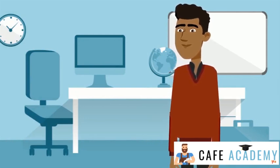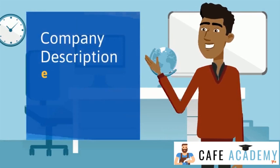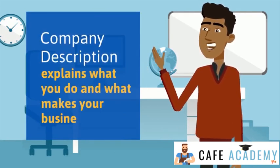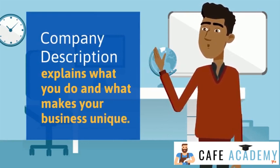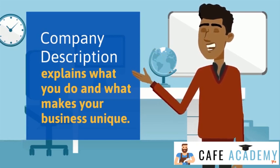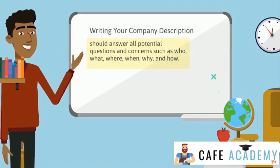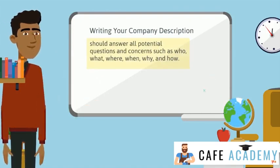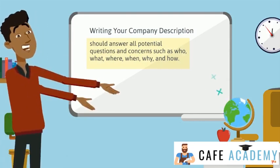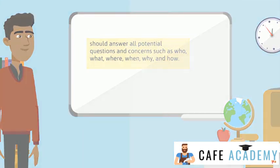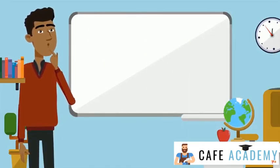First off, what is a company description and how can it be a valuable asset for you to get the money you need? A company description provides an overview of key aspects of your business, such as what you do and what makes your business unique. Knowing how to write a company description helps you communicate with lenders, investors, employees, and potential customers. All potential questions — who, what, where, when, why, and how — should be answered.